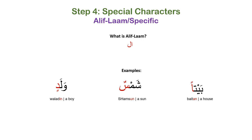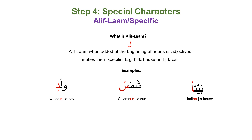Now we'll look at the next special character. The first was tanwin, which we just finished, and now we have aleph lam — also more formally known as al-tarif. What is aleph lam? It is pronounced 'al'. You've heard of lam aleph, but this is aleph lam — the total opposite. When you see aleph lam at the beginning of a word, it means the noun or adjective is specific.